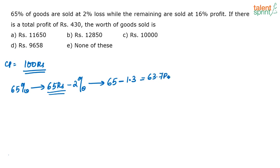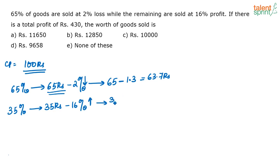Now the remaining 35% of the goods have a cost price of 35 rupees, since total cost price is 100 rupees. These remaining goods are sold at 16% profit. So the selling price is 35 plus 16% of 35. You can split 16% as 10% plus 5% plus 1% to make calculation easier.